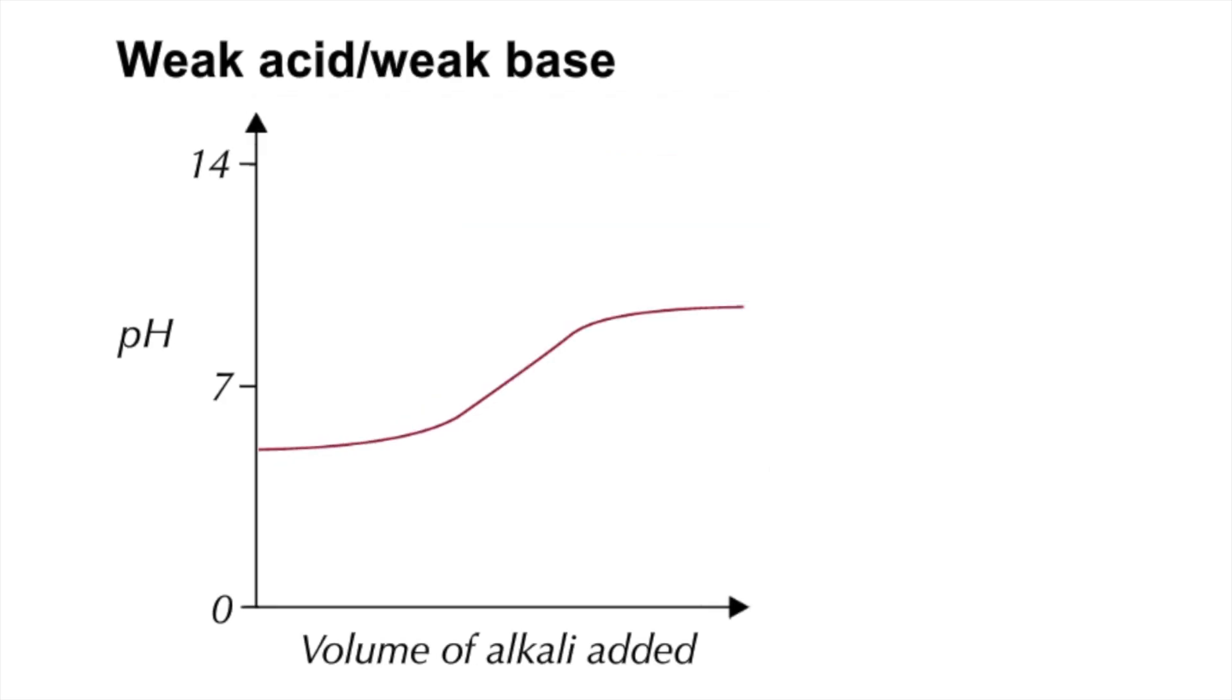The final one is weak acid, weak base. The starting pH is around 5, the final pH is around 9. The pH at equivalence depends on the relative sizes of the dissociation constants of the weak acid or weak base. None of that is required for A-level.